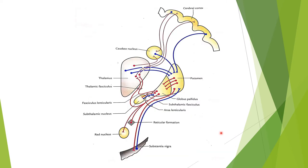This picture shows a pictorial representation of the connections of the basal ganglia. You can make out the various parts — caudate nucleus, putamen, globus pallidus, subthalamic nucleus, red nucleus, substantia nigra — and how they are well connected with the thalamus and cerebral cortex through neuronal circuits. More details about connections of basal ganglia will be covered in a physiology session.